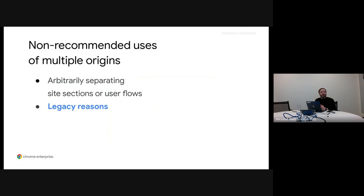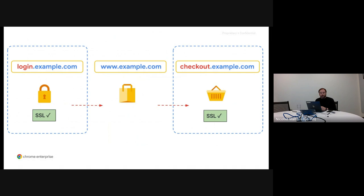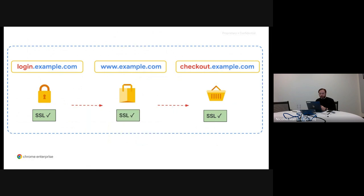Another reason may have to do with legacy decisions outside the developer's control. For example, before most of the web migrated to HTTPS, it wasn't uncommon to see sites that had only certain sections in SSL — for example, the login and checkout pages. They used subdomains to separate these more secure parts from others that were not in SSL yet. But after migrating the rest of the site to HTTPS, they never moved these parts back to the main origin. So you end up with a site structure based on a past decision that has no relevance today, but you still carry it forward.